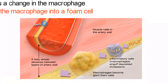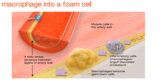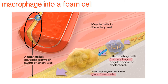The foam cells are largely what an atherosclerotic lesion consists of. While a lesion is initially induced by a buildup of LDL cholesterol, the LDL cholesterol is oxidized and phagocytosed, transforming the macrophages into foam cells. It is the foam cells that are full of lipid particles that are found inside an atherosclerotic lesion.